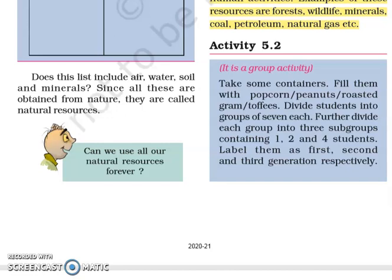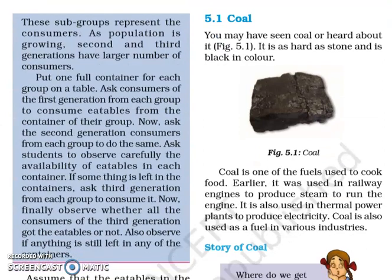Label them as 1st, 2nd and 3rd generation respectively. As population is increasing day by day, the 1st generation has 1 student, the 2nd generation has 2 students, and the 3rd generation has 4 students. These subgroups represent the consumers. Put one full container for each group on a table. Ask each generation to consume eatables from the container, and observe carefully the availability of the eatables — we will see the number gradually become lesser, checking if the 3rd generation gets any eatables at all.